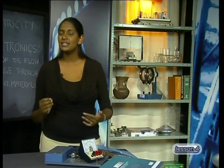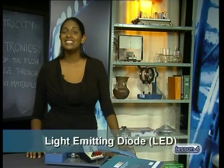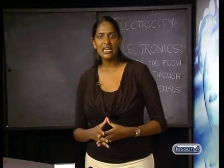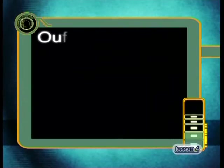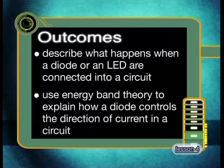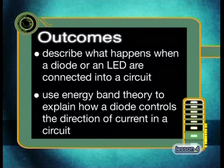But how do different semiconductors actually work? In this lesson, we will start to answer this question by having a closer look at what happens in two components found in many electronic circuits: the diode and the light-emitting diode, called an LED for short. Both the diode and the LED are used to control the direction of current passing through the circuit. Both components are made from a combination of P- and N-type materials, and get their distinctive properties because of what happens when P- and N-type materials are joined in what is called a P-N junction. By the end of today's lesson, you should be able to describe what happens when a diode or an LED are connected into a circuit, and use energy band theory to explain how a diode controls the direction of current.